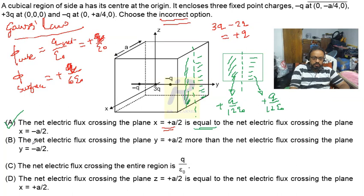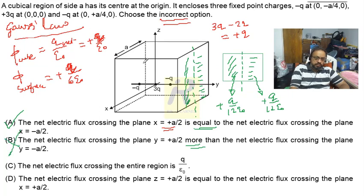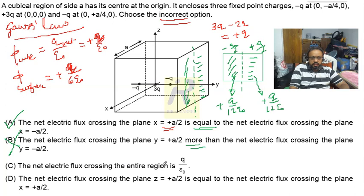Option B states that the net electric flux crossing the plane y = +a/2 is more than the net electric flux crossing the plane y = -a/2. This is wrong, because by the same symmetry argument, one side is +a/2 and another is -a/2, so the flux on both sides must be equal — neither is more nor less.